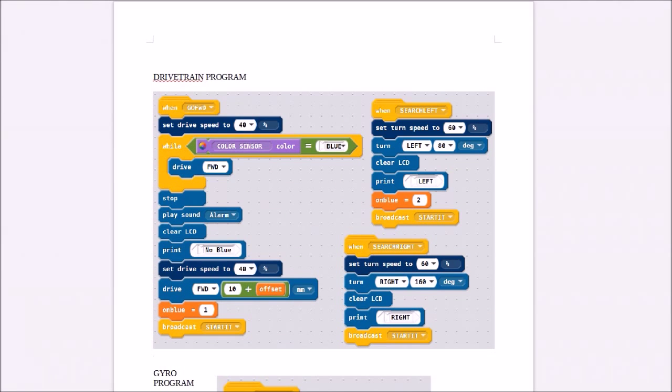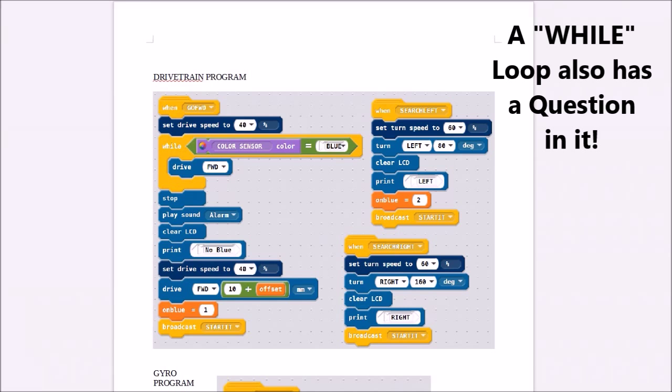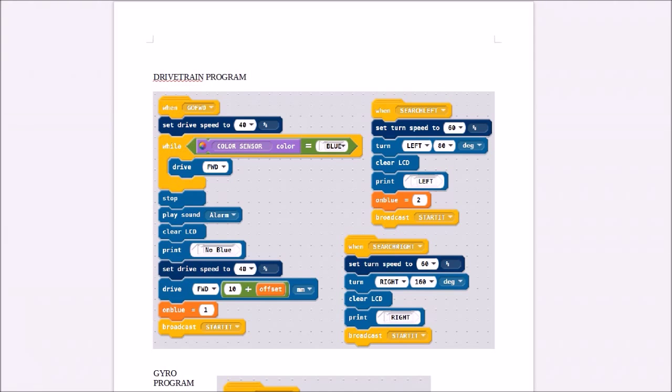Then looking at the drivetrain program, it's exactly the way the flow chart is. If you receive go forward, the robot goes forward until a blue sensor does not detect blue. Then it gets out of the while loop. The color sensor color is blue equals blue, drive forward. As soon as the color sensor does not detect blue, then stop the motor, get out of the while loop. It's called a while loop because it keeps repeating as long as the sensor is blue.